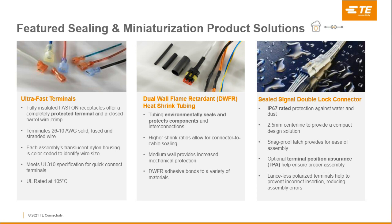Next, our DWFR keytrain tubing product family helps seal and protect your end application. This is highly flame-retardant dual wall keytrain tubing that environmentally seals and protects components. Its higher 3-to-1 or 4-to-1 shrink ratio allows for easy connector-to-cable sealing, its special adhesive is designed to bond to a wide variety of materials, and its medium wall protection thickness increases mechanical protection, making it a very reliable solution for drone applications.